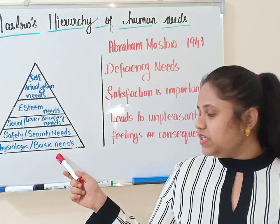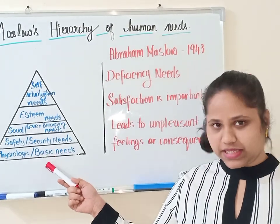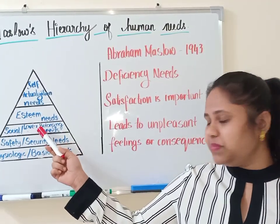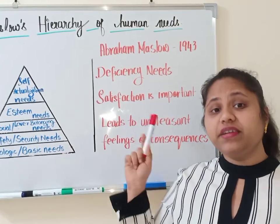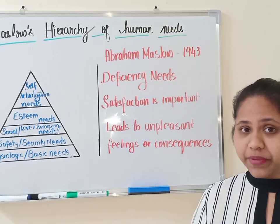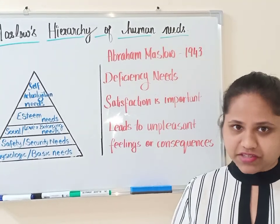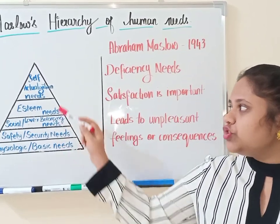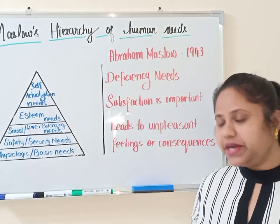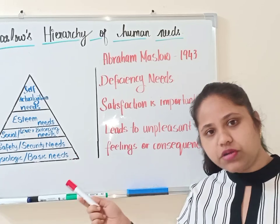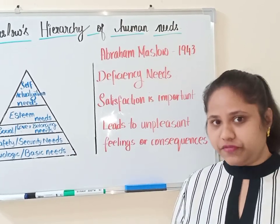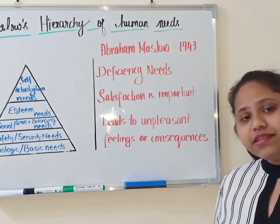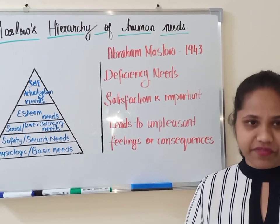The first four needs from the bottom — physiological or basic needs, safety or security needs, social or love and belonging needs, as well as esteem needs — are considered to be deficiency needs, because if a person is deprived of these needs then he feels unsatisfied. So satisfaction is important. If a person is deprived of these needs it can lead to unpleasant feelings or consequences.